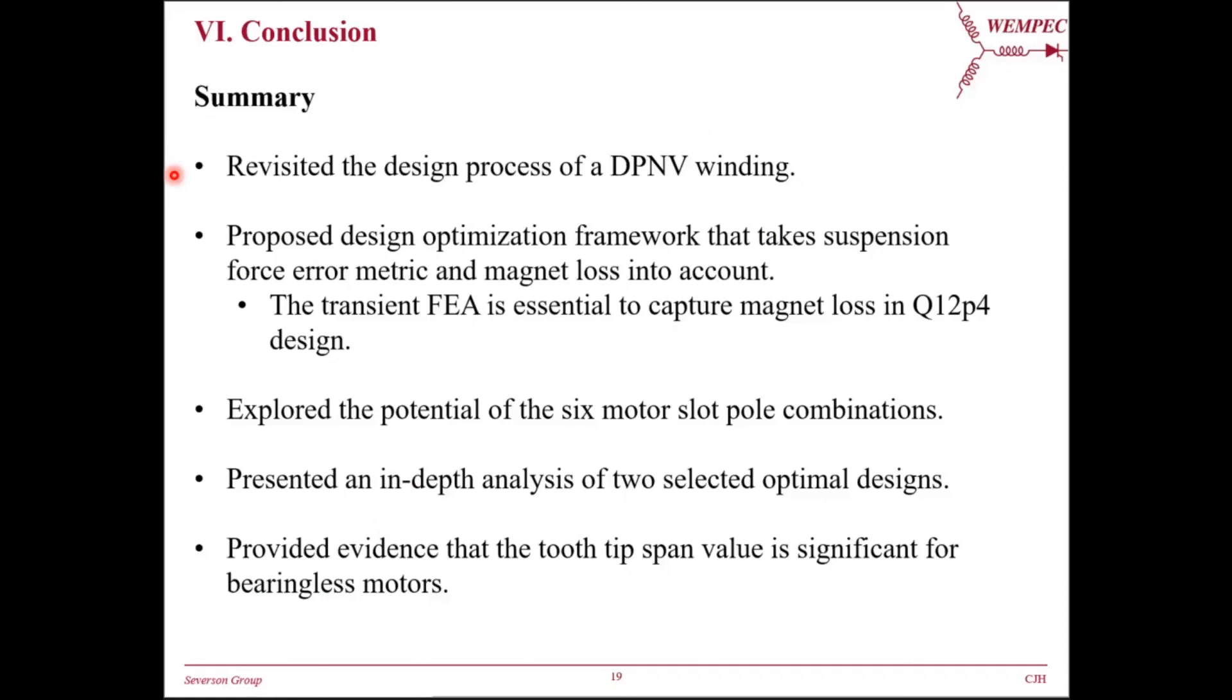In summary, we have revisited the design process of DPAV winding. We have proposed design optimization framework that takes suspension force ripple metric and magnet loss into account. The transient FEA is essential to capture magnet loss in Q12P4 design. We have explored the potential of the six motor slot pole combinations. We also presented an in-depth analysis of two selected optimal designs. Finally, we provided evidence that the tooth-tip span value alpha-st is significant for bearingless motors.